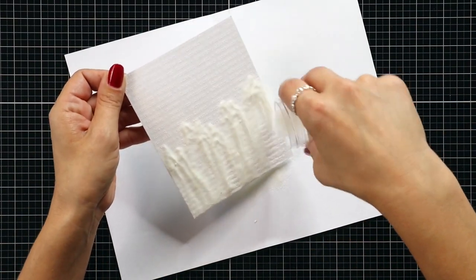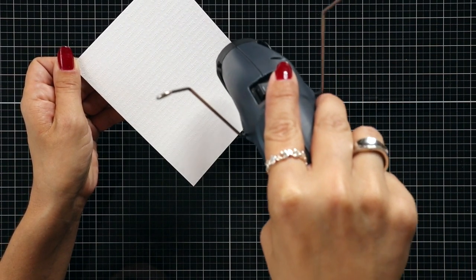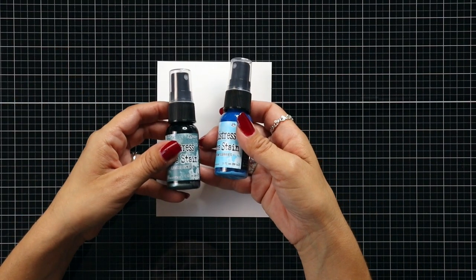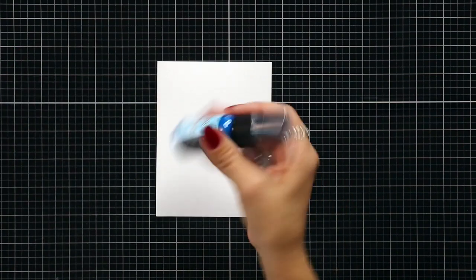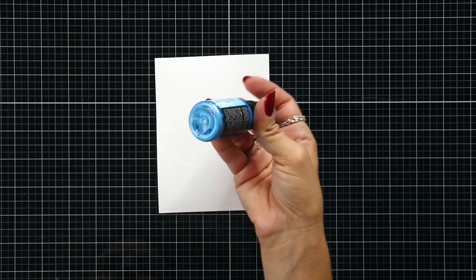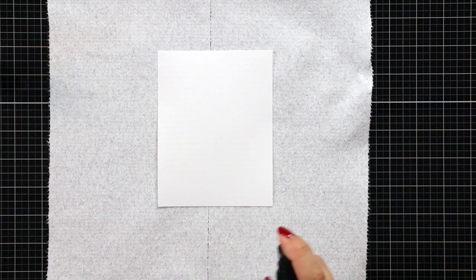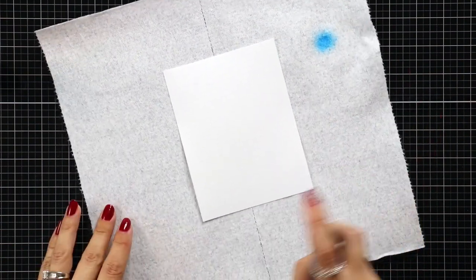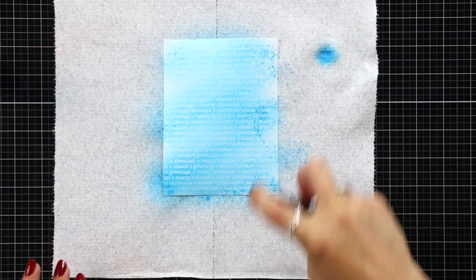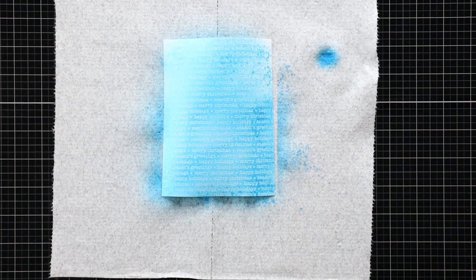After I had stamped that background stamp in Versamark ink, I sprinkled on clear embossing powder and then melted that with my heat tool. For the background I am using Distress Mica Spray Stains. This is in Snow Flurries and Frosted Juniper was the other one. You want to make sure you're shaking these really, really well to make sure that all of that mica is mixed in. I'm just spraying this across the background. I love that Snow Flurries.